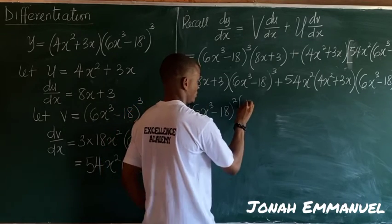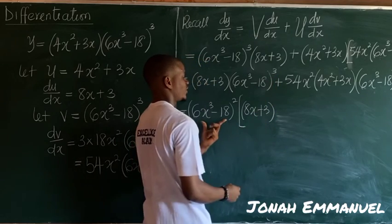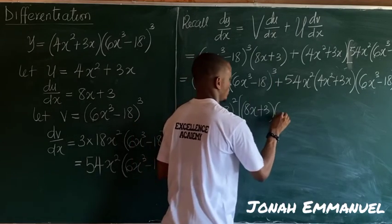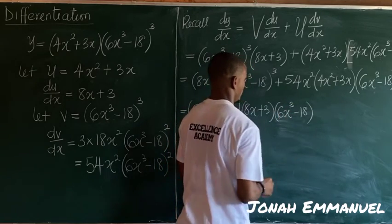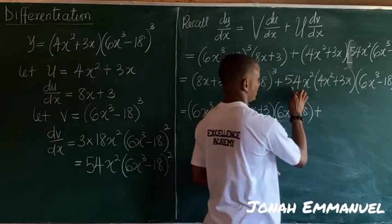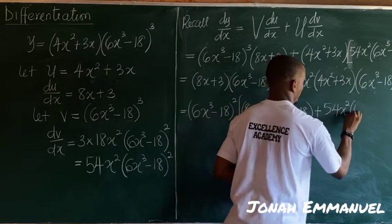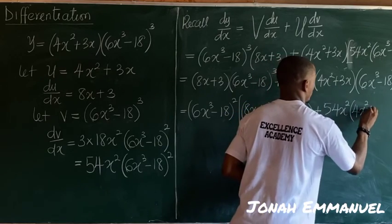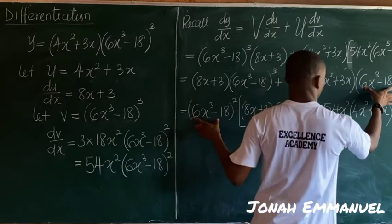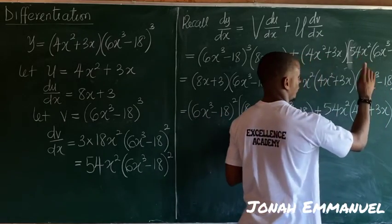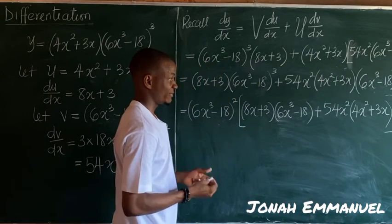I'm left with, this now becomes 8x plus 3 into, this is cubed, I've taken out two from this so one of it is left, so becomes 6x cubed minus 18, plus for this now I'm having 54x squared into what I have here, 4x squared plus 3x. Observe I've taken away two of this here, so hence this term is totally off.